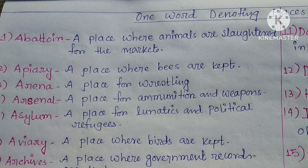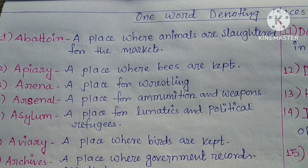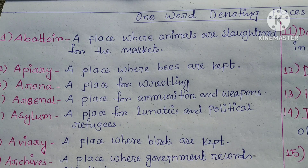Asylum — a place for lunatics who suffer from some type of illness, and also for political refugees. Political refugees are persons who are expelled from a country due to political reasons.